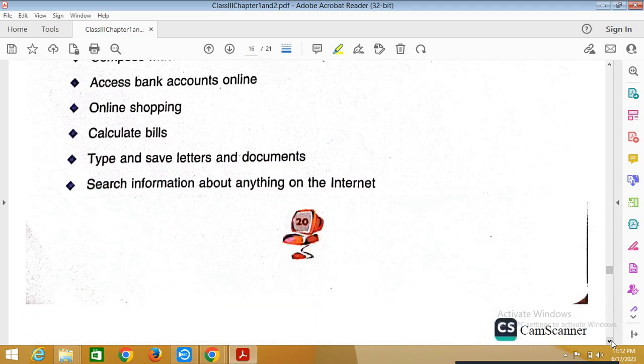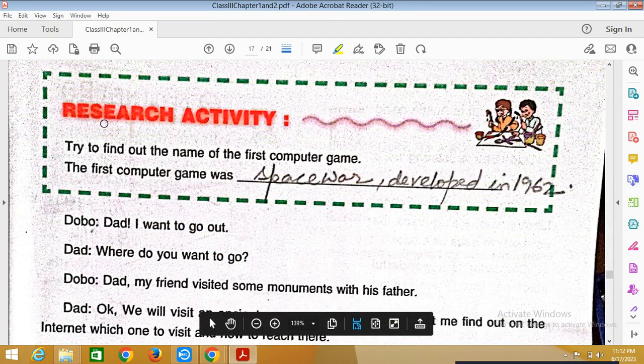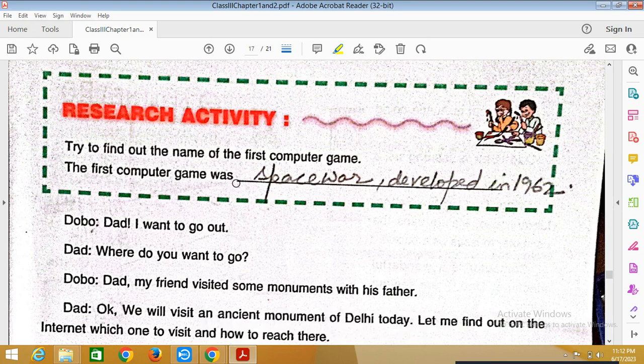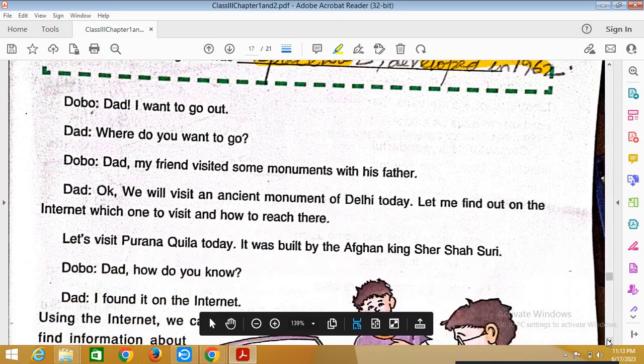Research activity: Try to find out the name of the first computer game. The first computer game was called Space War, which was developed in the year 1962. This activity you can write.